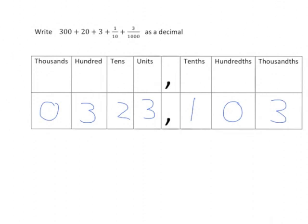So the number we have is 0,323,103 but obviously we don't write the zero right at the start so 323,103 is the answer.